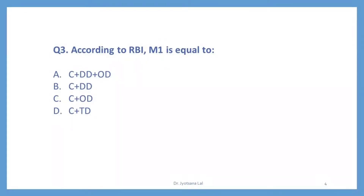Question number 3. According to RBI, M1 is equal to. Here you have to find out, according to the RBI measure, the money supply M1 is equal to what. There are four options given: A — C plus DD plus OD; B — C plus DD; C — C plus OD; and fourth option D — C plus TD, that is time deposit. So what will be the correct option?